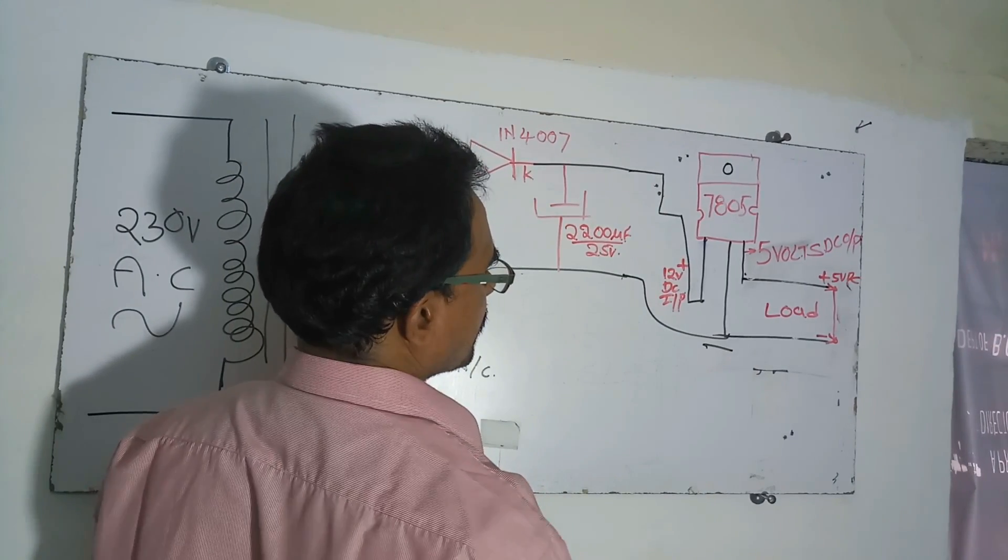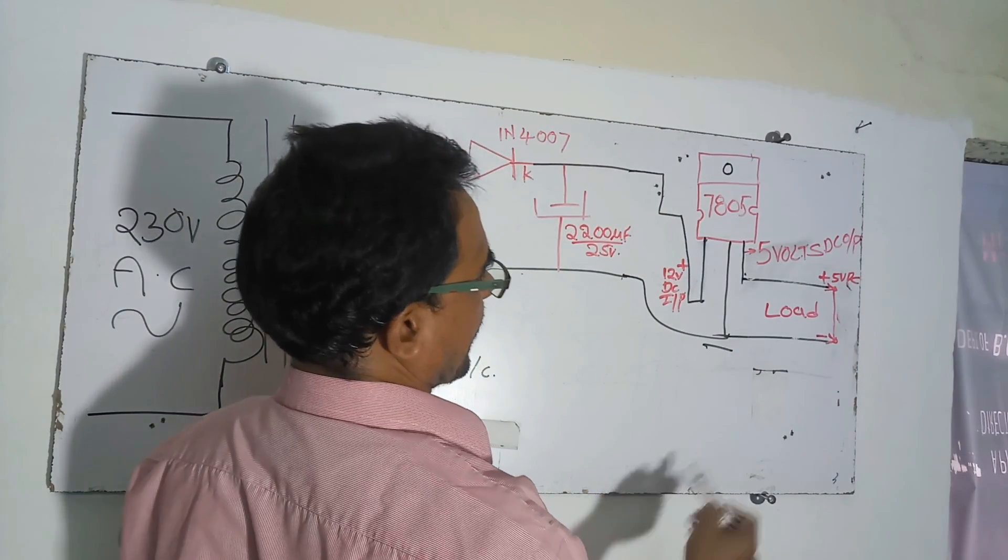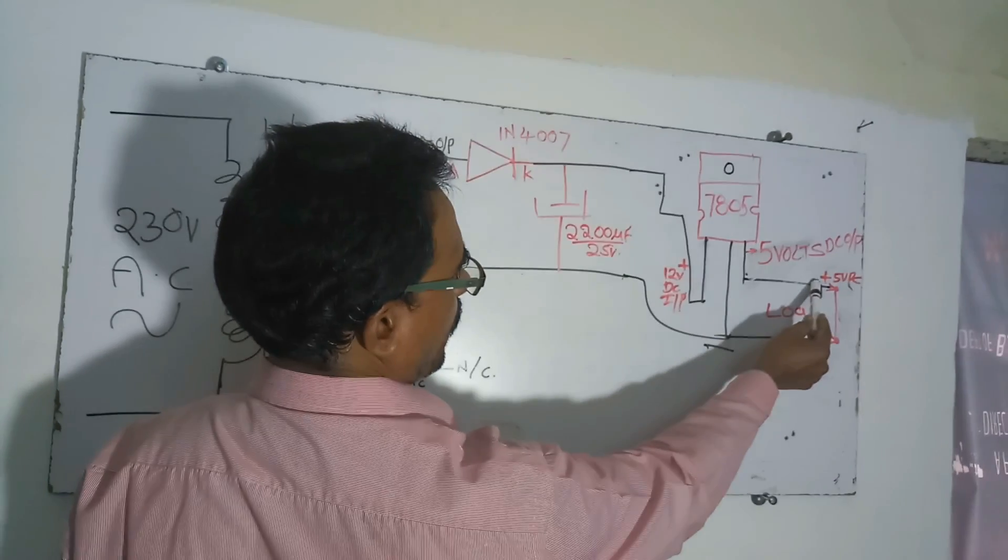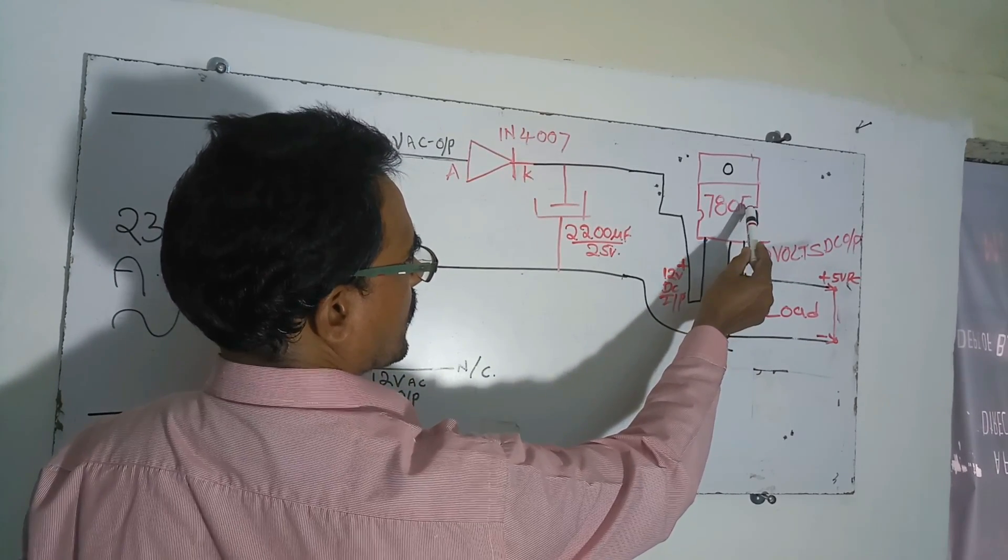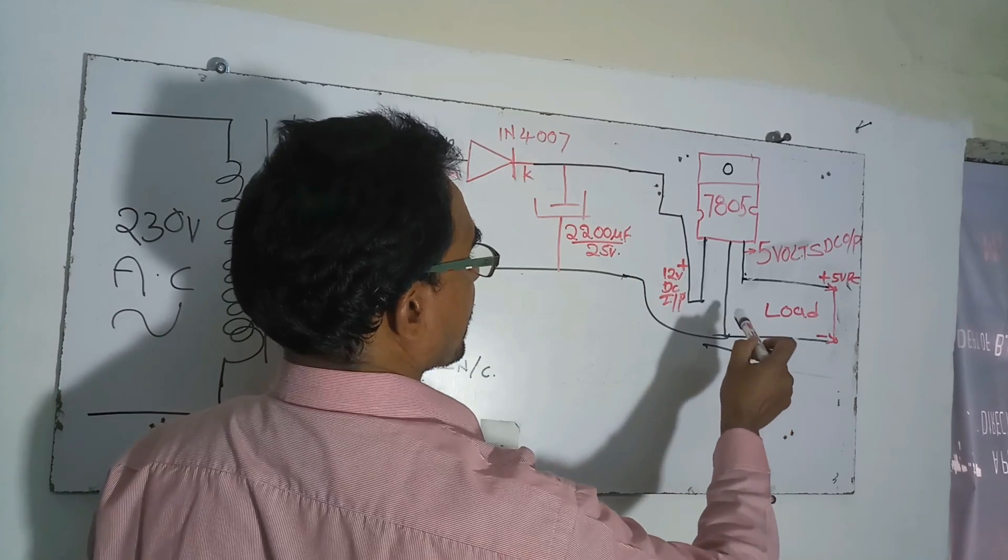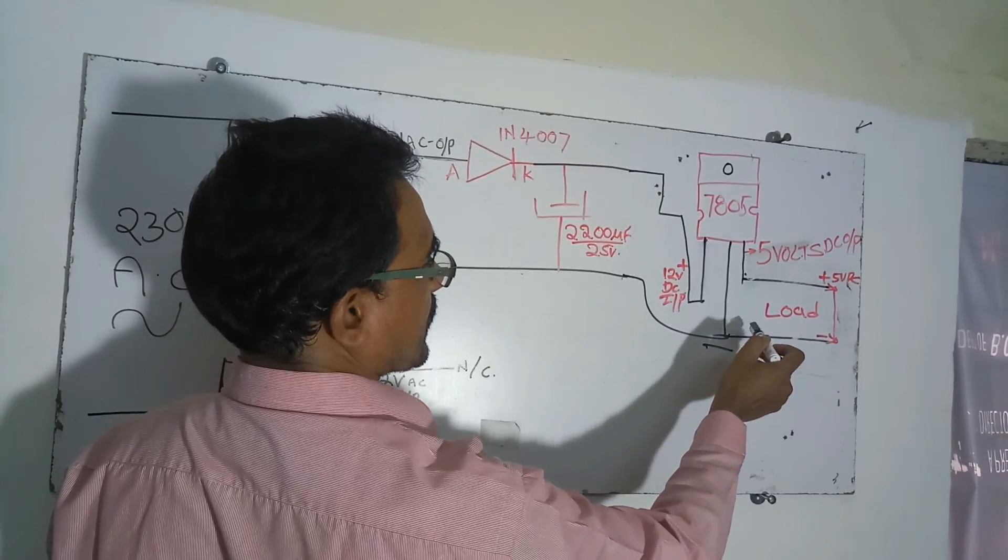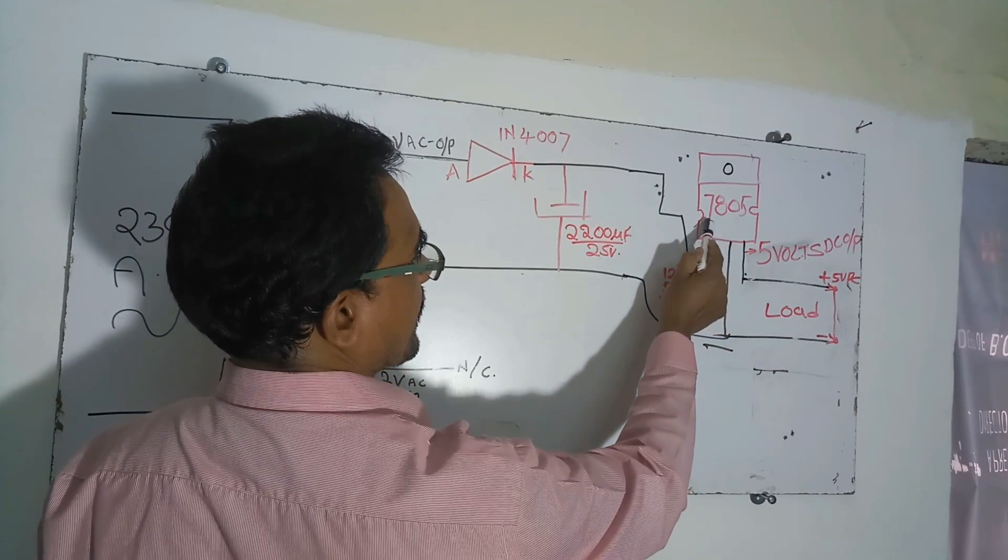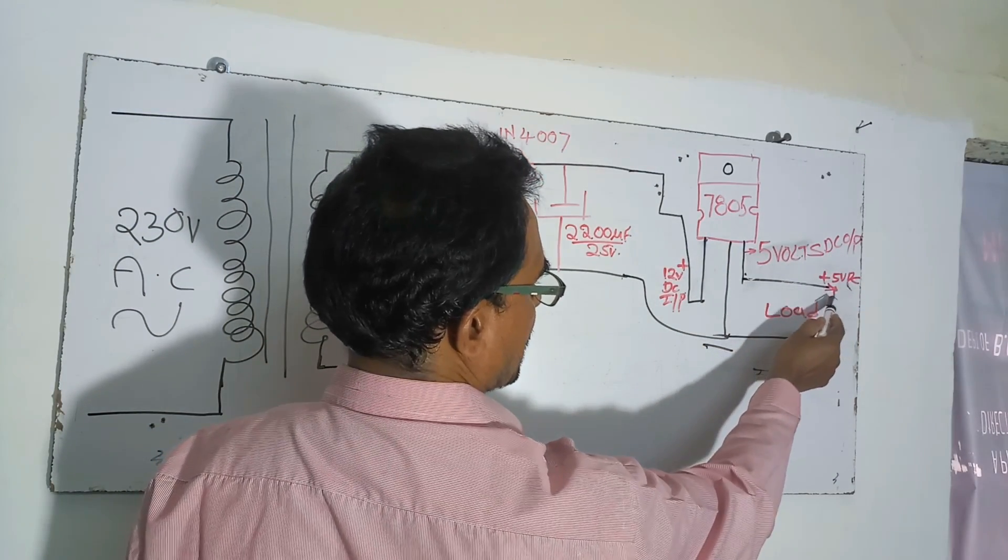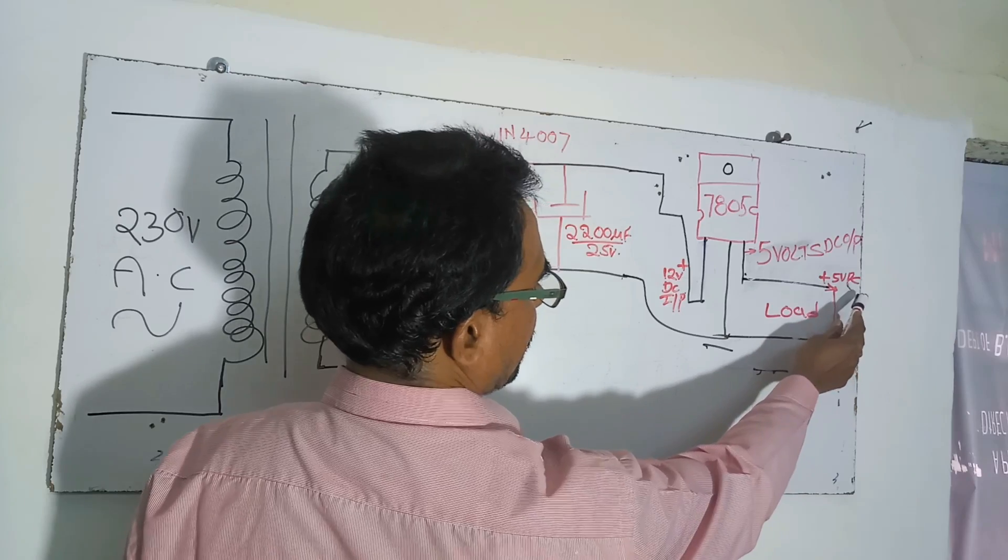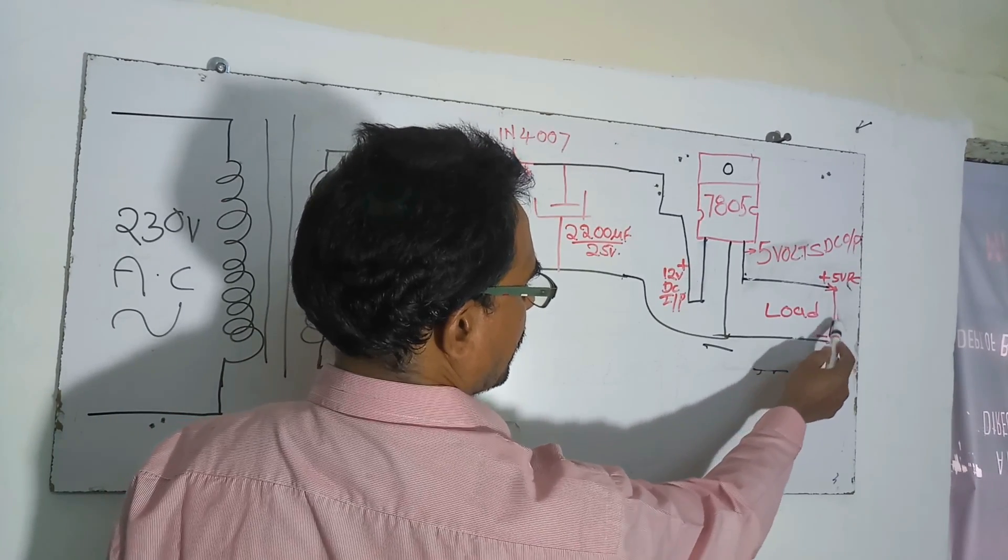This is the negative. After that you can give positive output taken by this 7805. After that you can take this positive output third pin 7805. After regulating, positive is constantly coming up. This is connected.